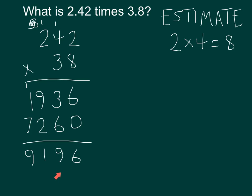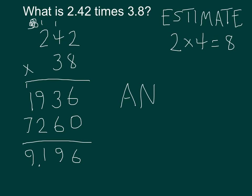Here's my question: where does the decimal point go — there, or there, or there, or there? Look at your estimate. My estimate is about 8, which means I've got a number with just ones and no tens. So I don't want something like 91.96 or 919 — I want something like 9.196. That's where my decimal point goes. My answer is 9.196.